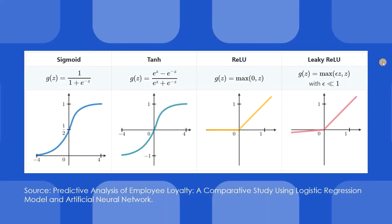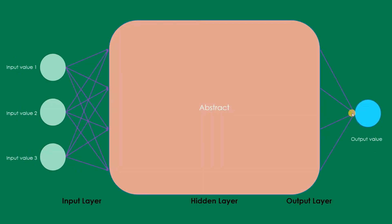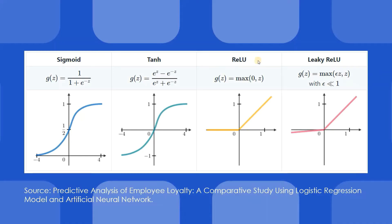The activation function can be anything — it can be a sigmoid function, an inverse tangent function, a ReLU function, or a leaky ReLU. We will just see how they work here. Sigmoid is famous for output layers. In this figure, the output layer also has an activation function. In general, hidden layers use ReLU as their activation function, and the output layer generally uses sigmoid.